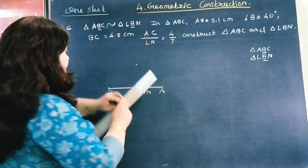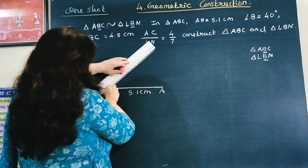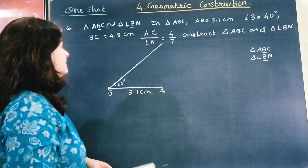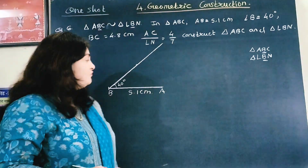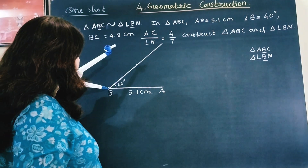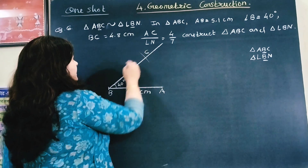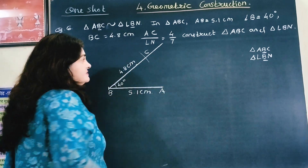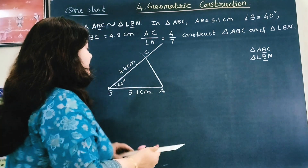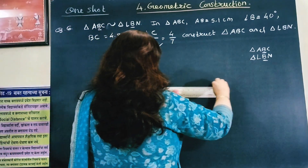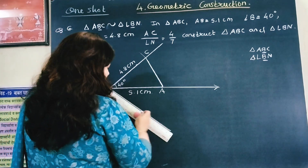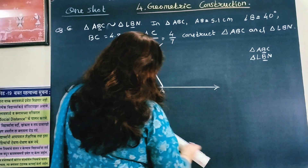Here it is 40 degrees — this is my 40 degree angle. BC is 4.8 cm, so let us draw 4.8 cm. This is 4.8 cm and this is my point C. Let us join this point to complete triangle ABC. Now we have to extend the BA ray and draw another ray from B randomly — there is no need to measure for this ray.